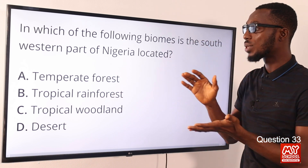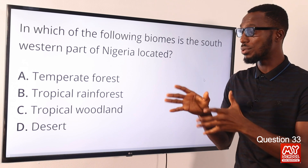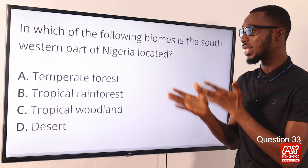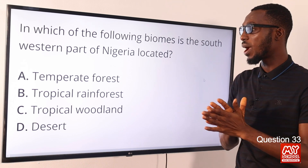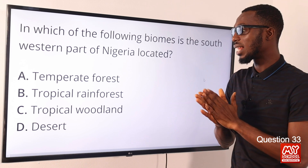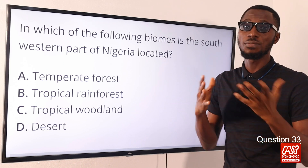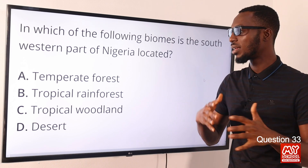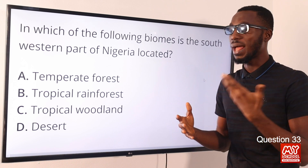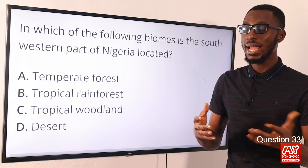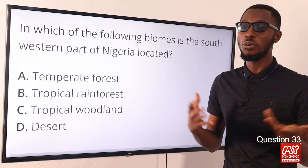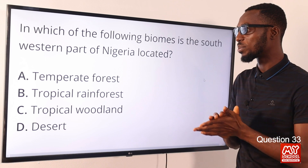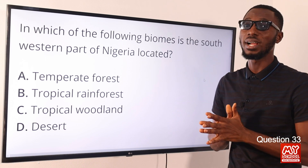So the closest answer here is option B for tropical rainforest. We have characteristics like dense forests with several kinds of trees, presence of climbers, epiphytes, and abundance of rainfall. The correct option is option B for tropical rainforest.